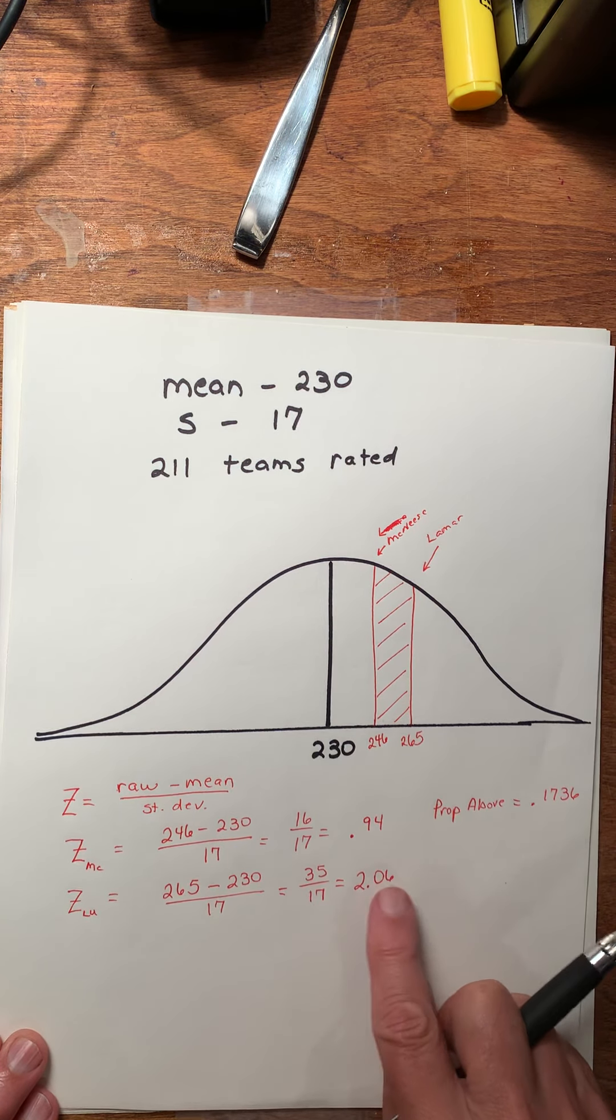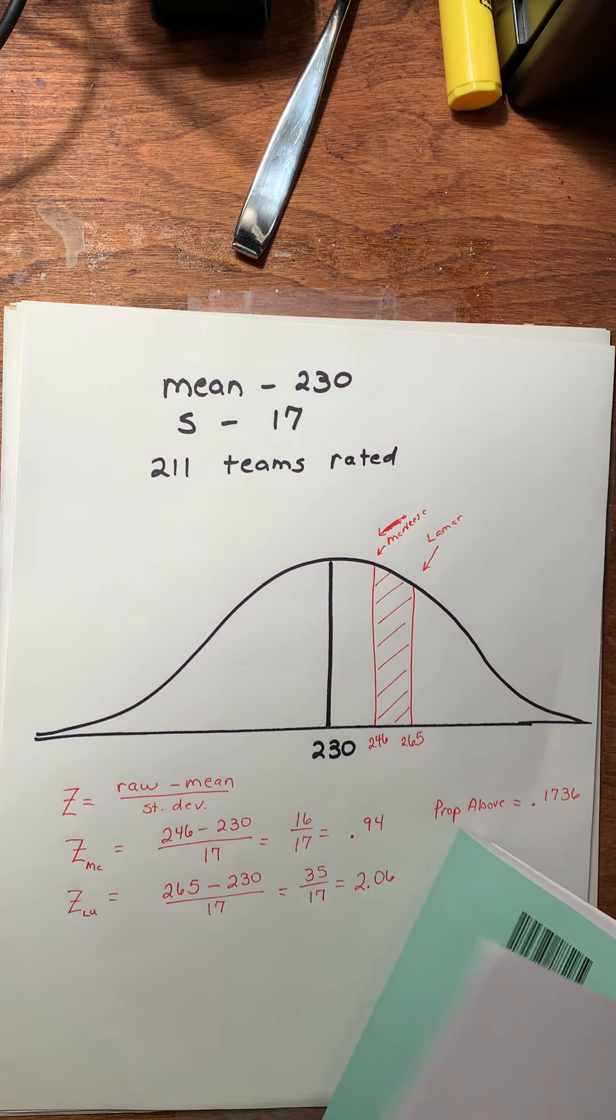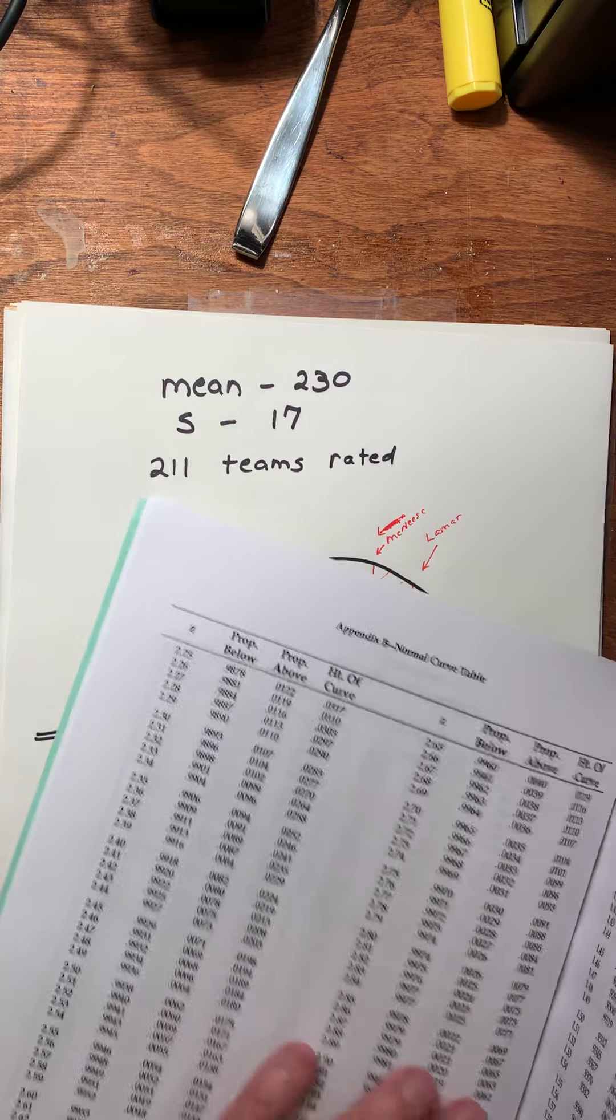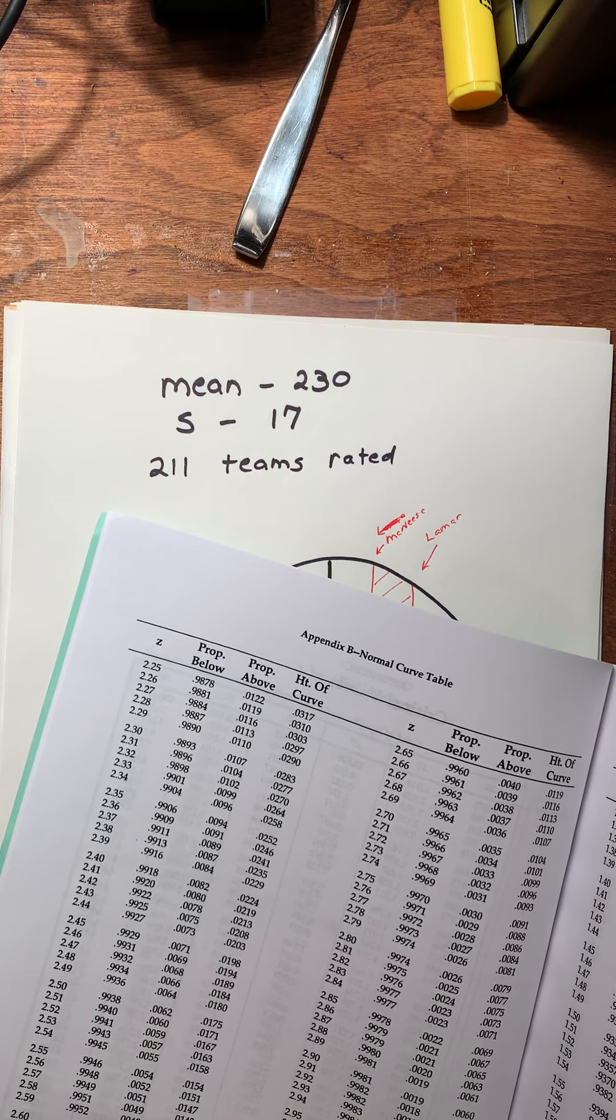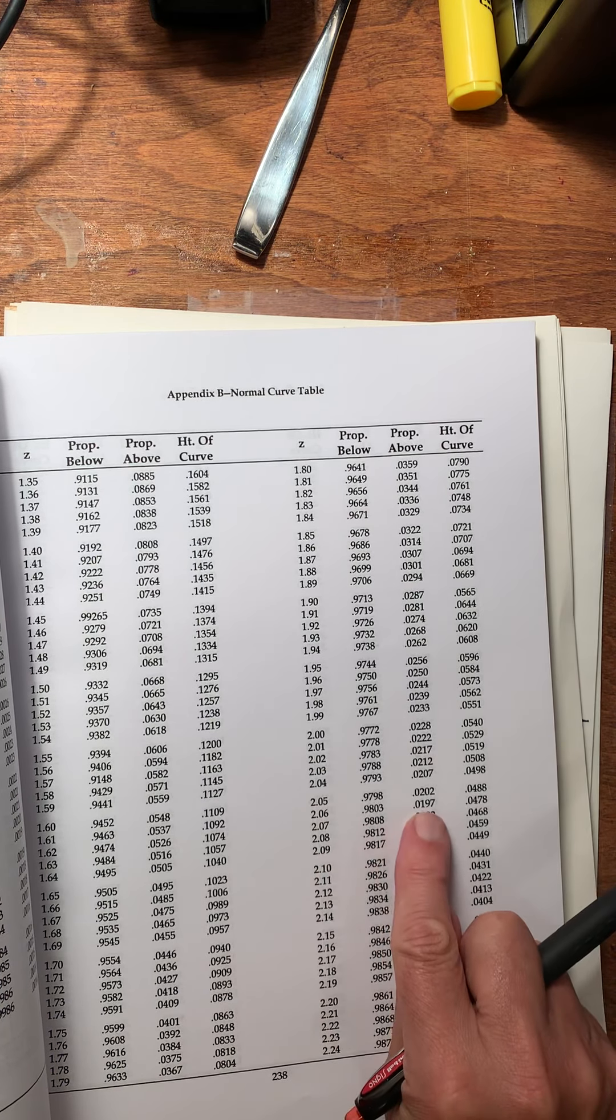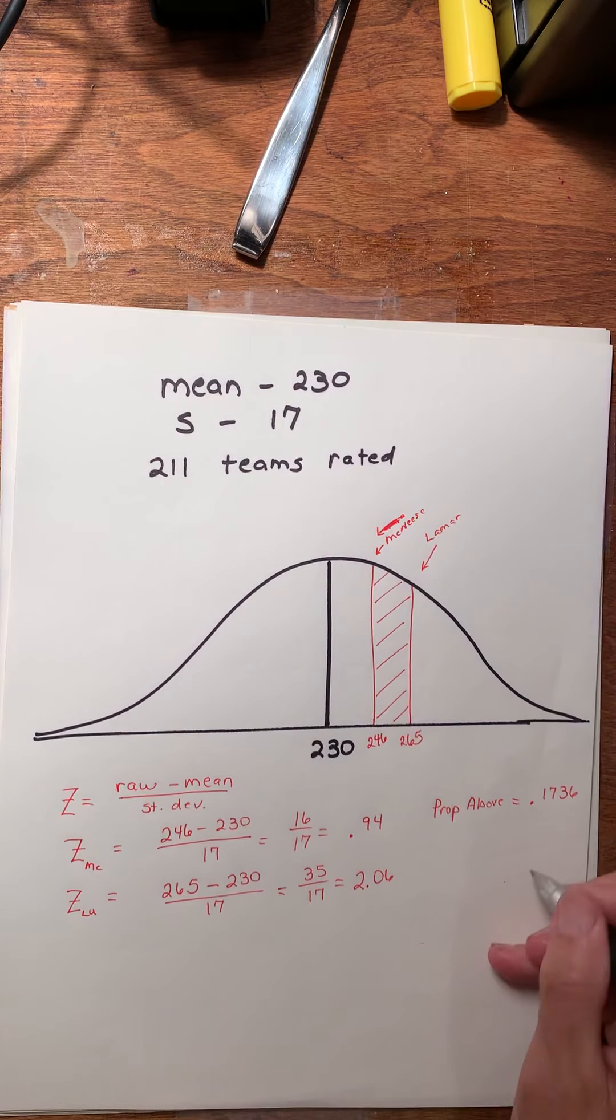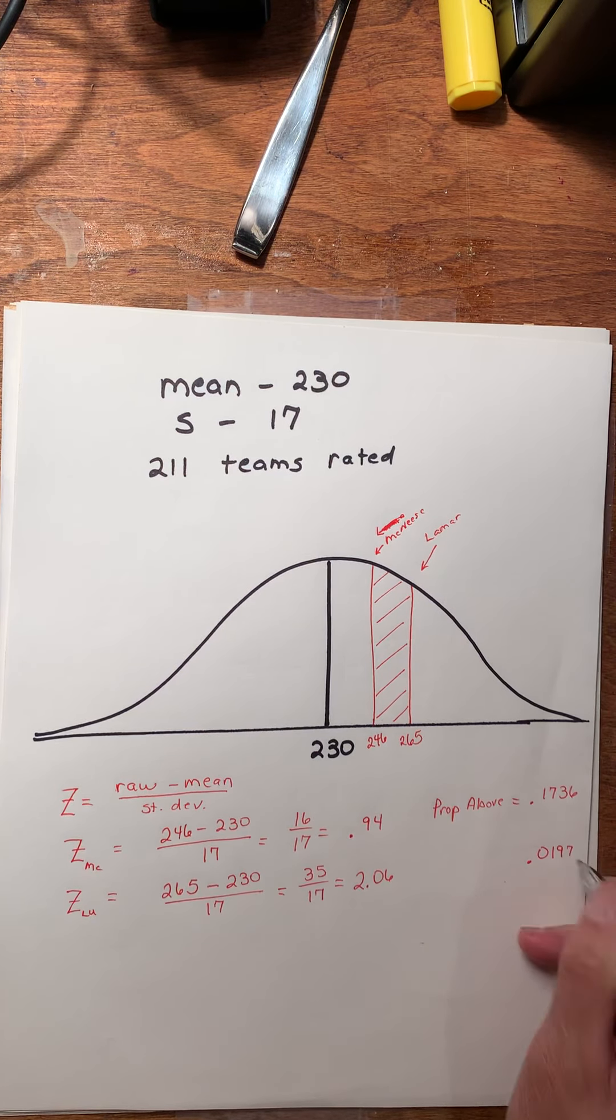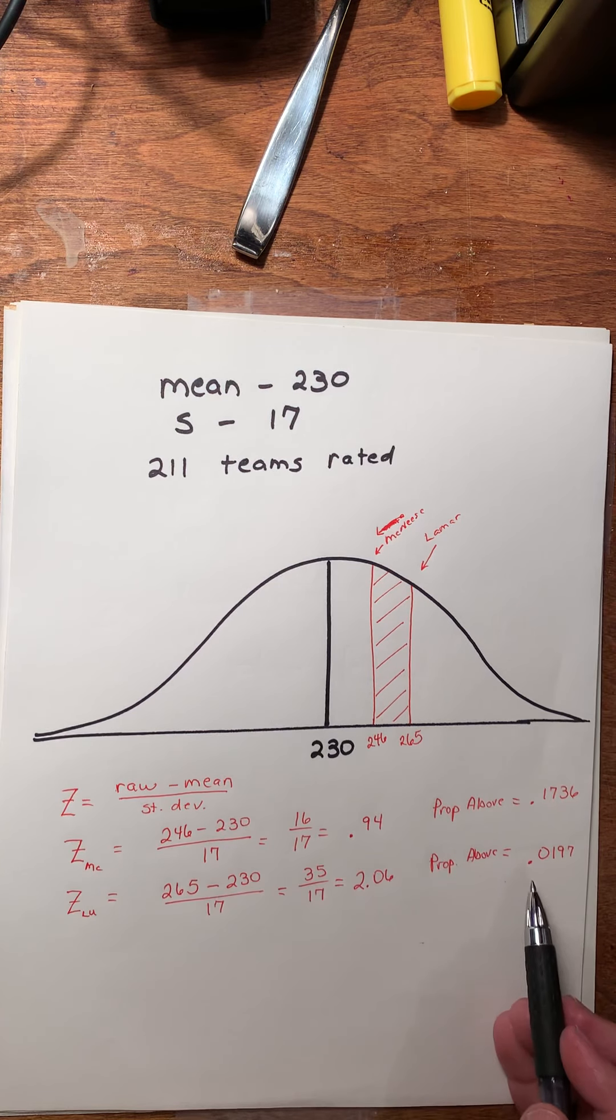So my Z number has to be two decimal places to the right. So I rounded 588 up to 6. So let me look up 2.06. There we go, it's on page 238, 2.06. And again, I want the stuff above, so that's 0.0197.